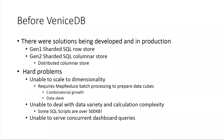That first-generation system ran for about a year and a half before running out of steam, so a second-generation system was built, switching from row store to column store. About five to six months after that was built, a more mature distributed column store had also been built internally at Microsoft. The second generation worked for about another year and a half. Then I was brought in to build the third generation, because the second was also running out of steam. To start, I analyzed why the first two generations had failed.